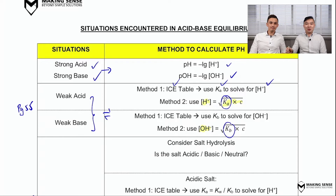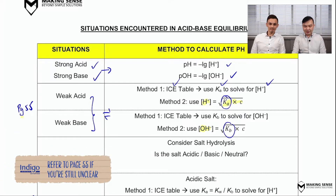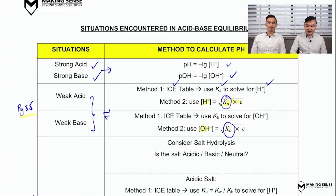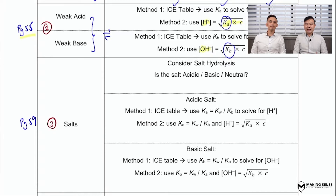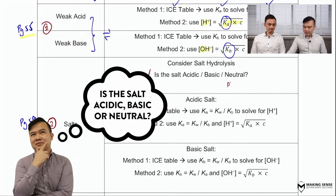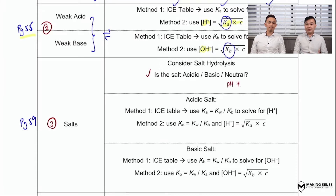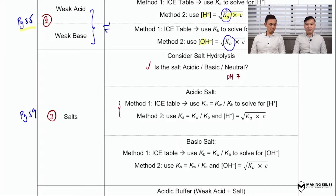The methods will differ slightly. There are two ways to do it: you can either use the ICE table and write down the Ka expression to solve for the H⁺ concentration, or you can use a shortcut — simply apply the formula: H⁺ concentration = √(Ka × C). You can do the same thing if you know this is a basic salt, but then you'll be calculating the concentration of OH⁻. To consolidate, if you are still not quite sure, you can always refer to page 55 for the notes.